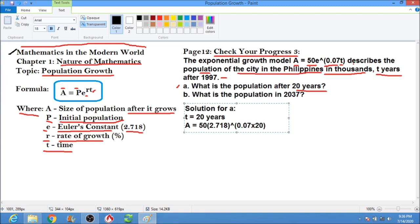So that will be A equals 50 times 2.718 raised to, 0.07 times 20, that will be 1.4.